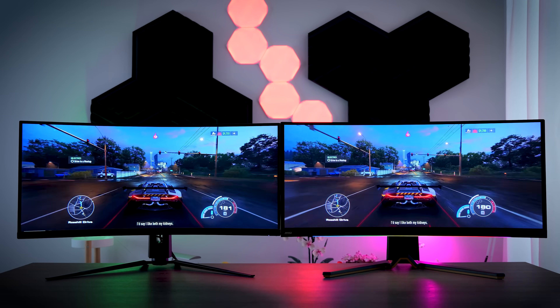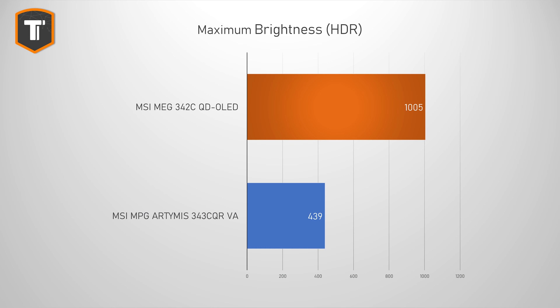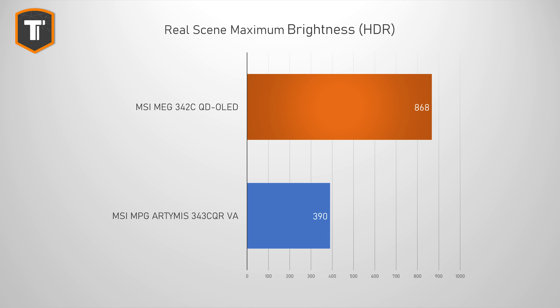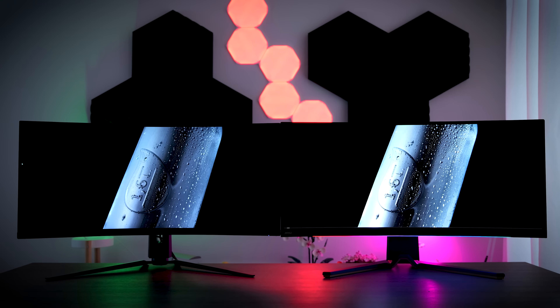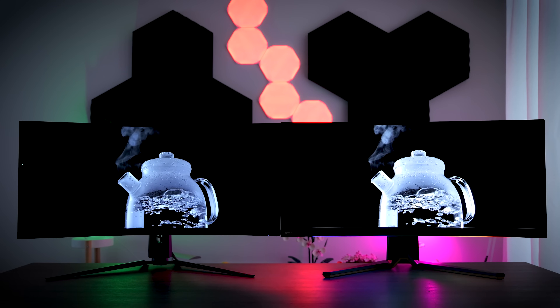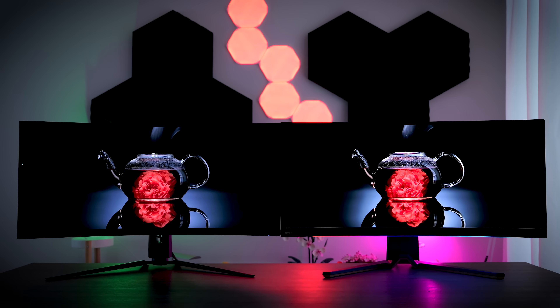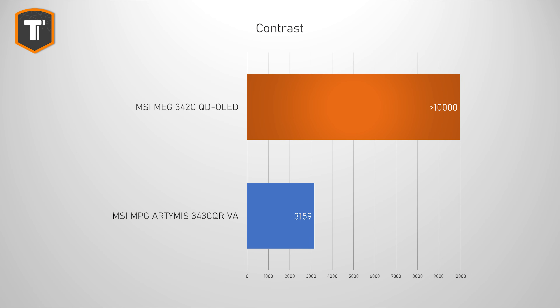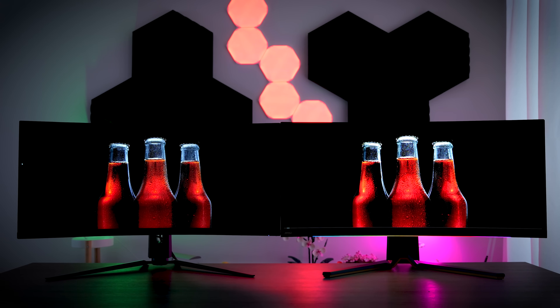In HDR mode the QD OLED wins easily, with a peak brightness of just over 1000 nits. In typical HDR content like movies or games you can expect somewhere between 600 and 800 nits depending on the scene. Meanwhile the VA panel barely goes over 400 nits, hitting about 380 to 400 nits in typical HDR content. Both VA and OLED are supposed to offer very good contrast, but side by side it isn't even close — VA's typical 3000:1 contrast is far better than a typical IPS panel's 1000:1, but OLED's ability to turn individual pixels off to display true blacks makes even a very good VA panel's blacks look like a shade of gray.